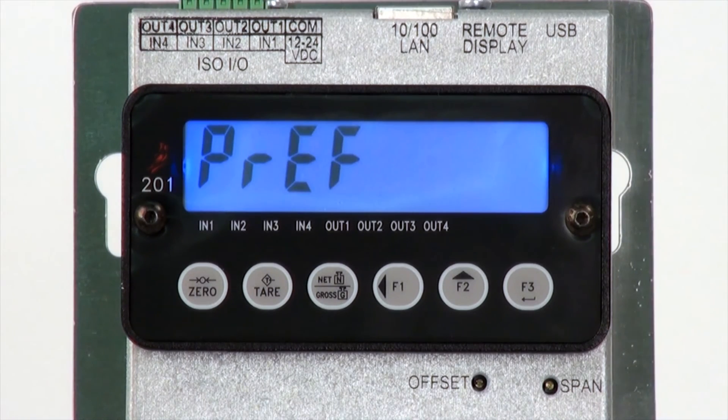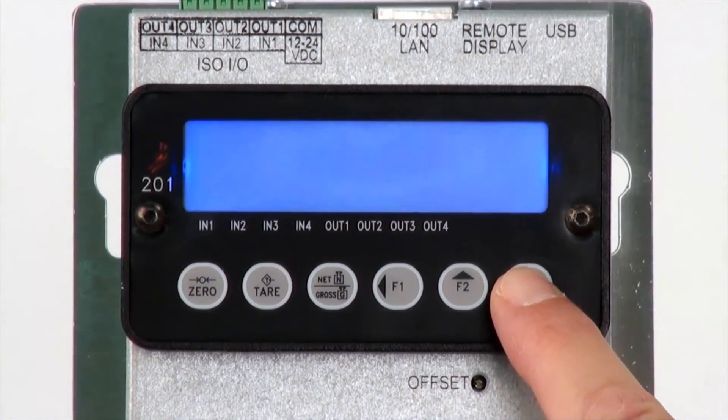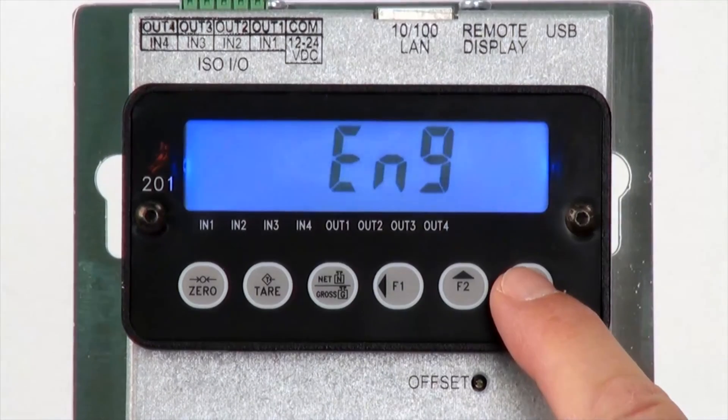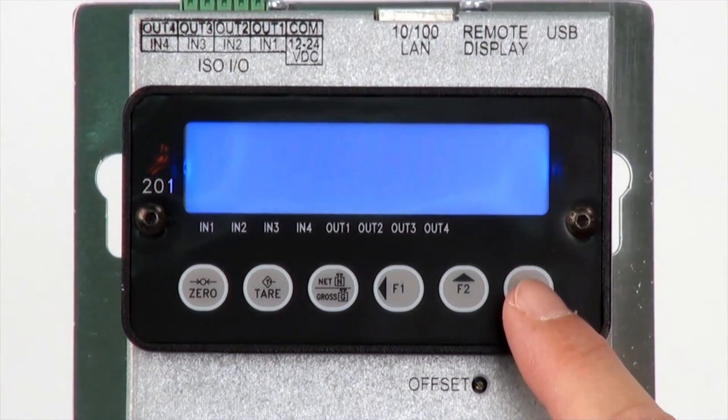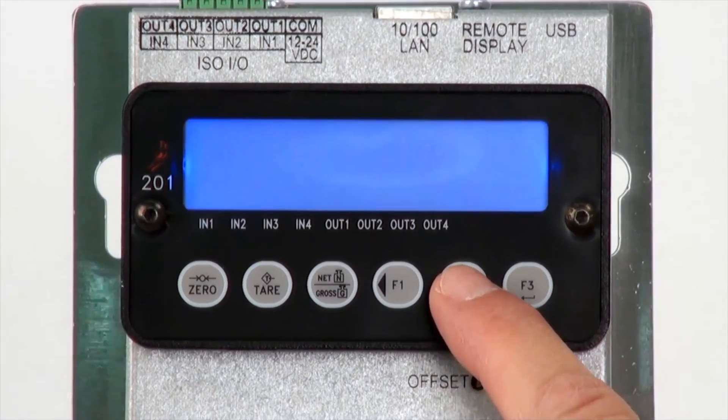The preferences menu includes language, date order, 12 or 24 clock, function key assignment, and the default, under, accept, and over background colors. Selectable languages are English or Spanish. The date order has three different settings to choose from. The clock can be toggled for 12 or 24 hour.